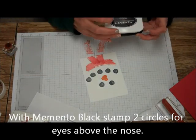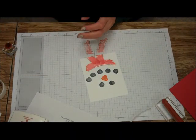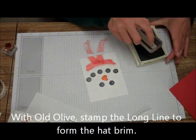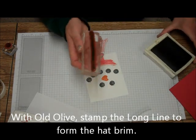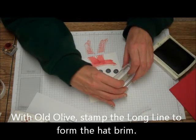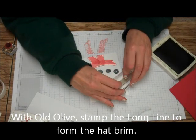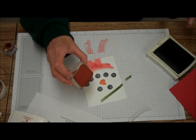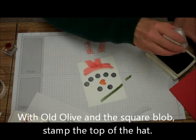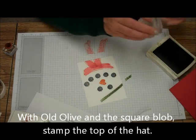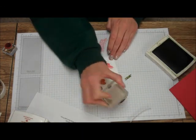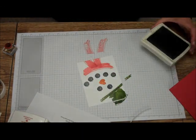And then we're going to make the hat with Old Olive. We're just going to put that on a little like that, and then the big block swish. And I'm just going to put it just like that. So we have our snowman done.